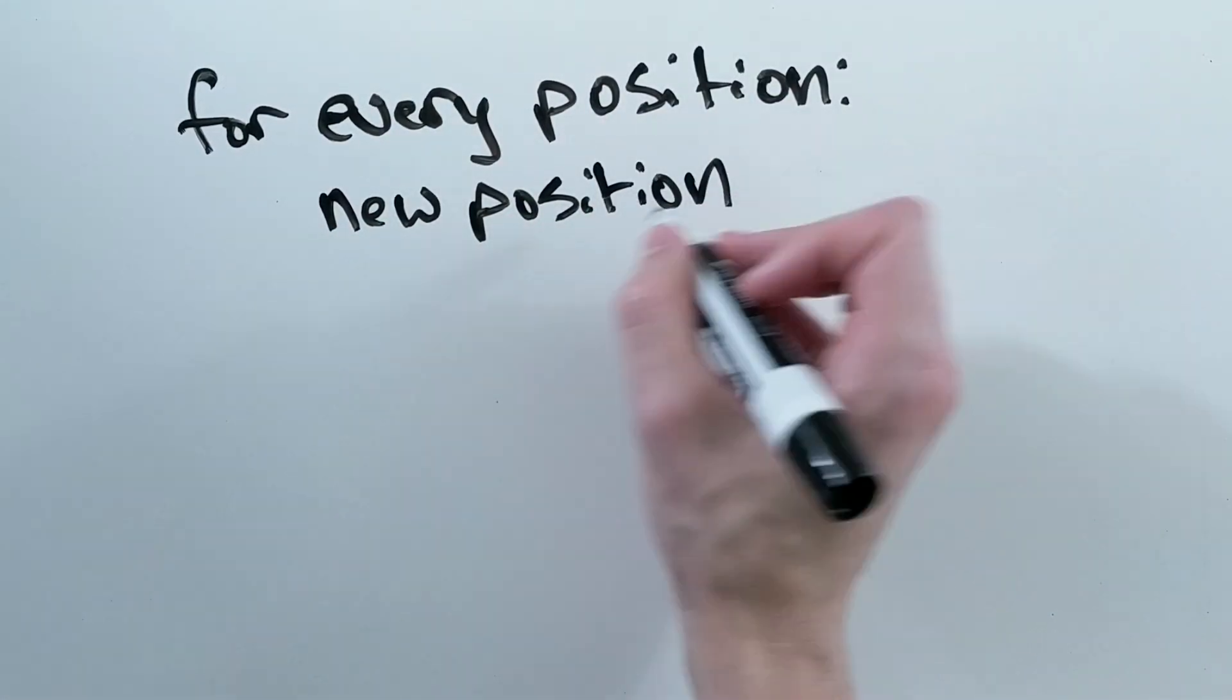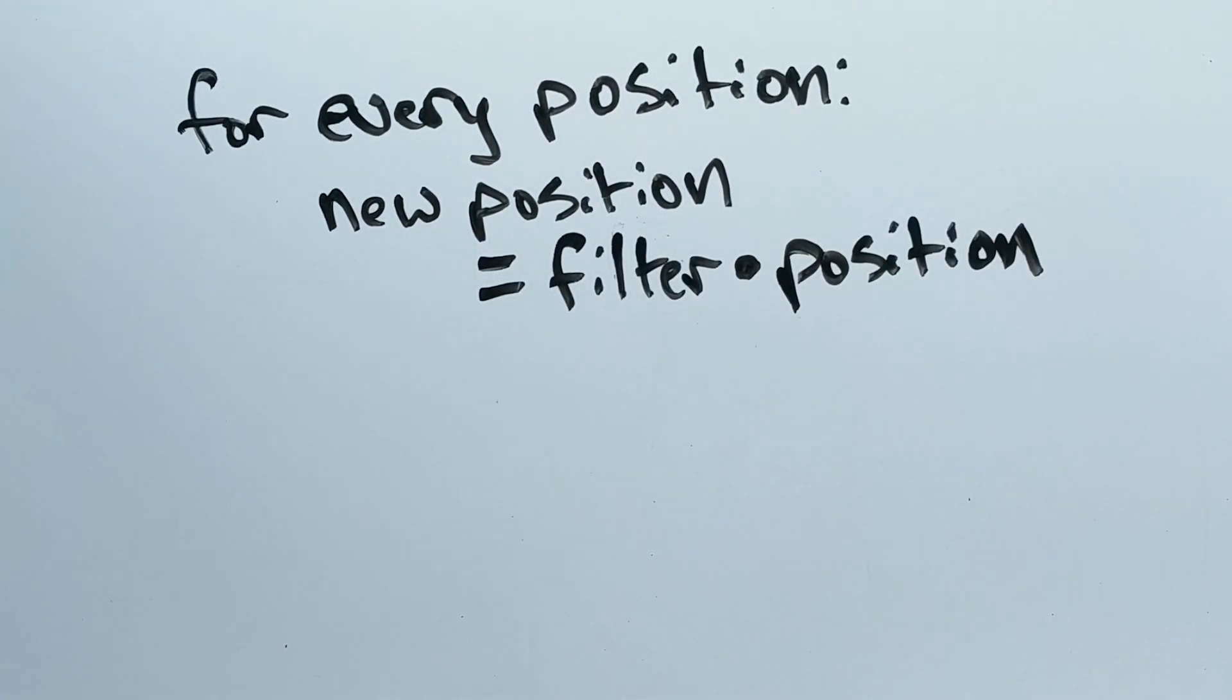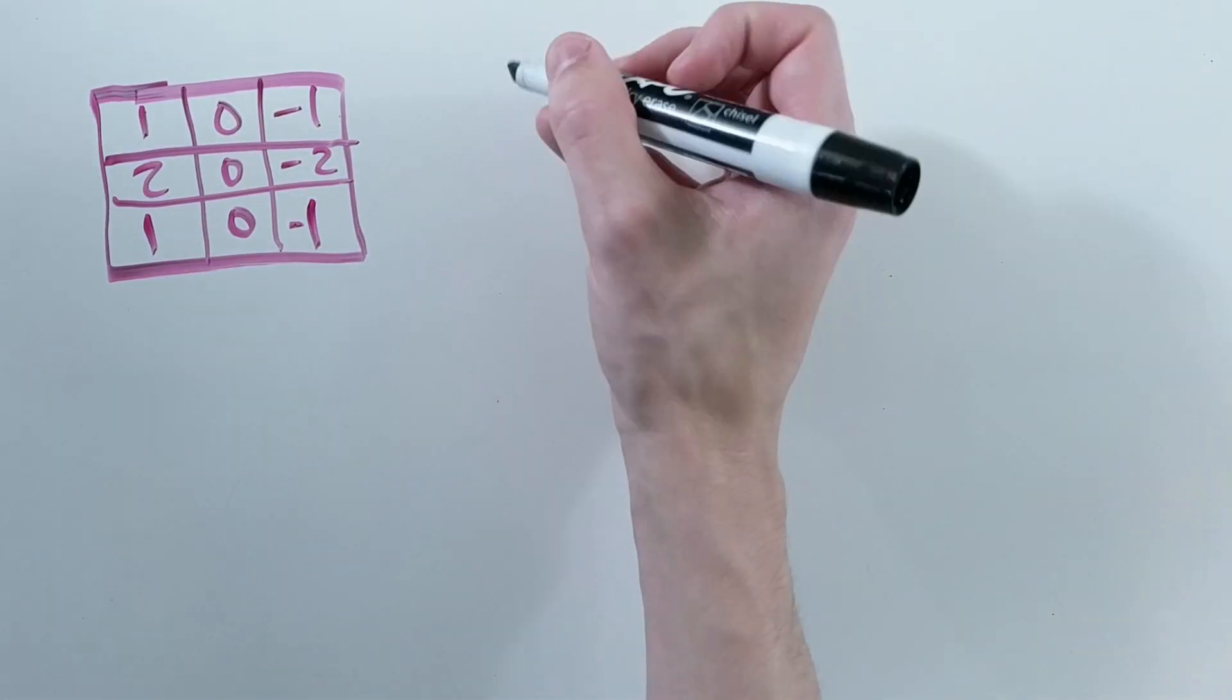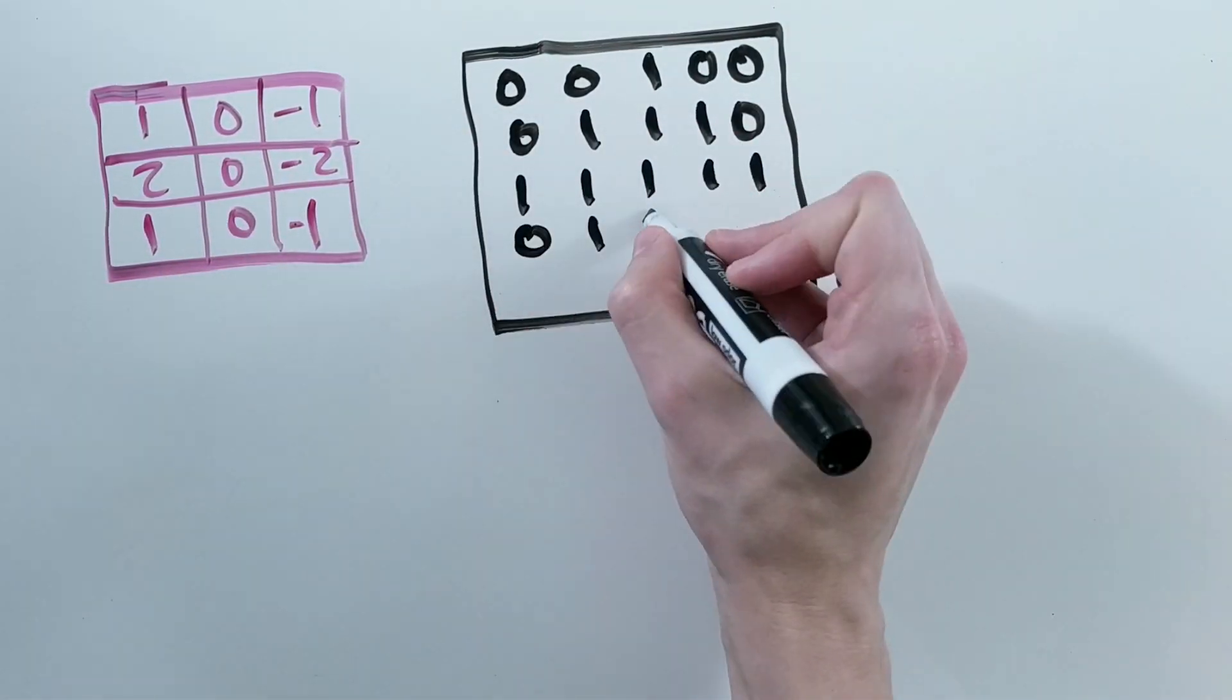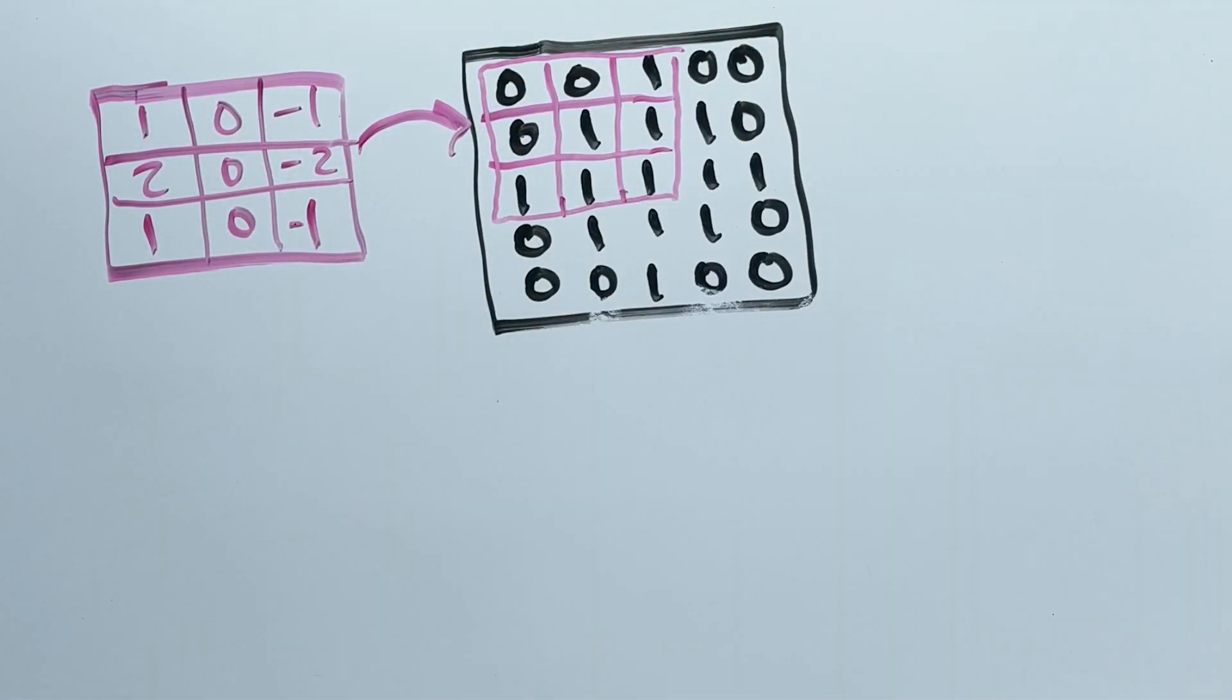More specifically, for every valid position in the input, it computes the dot product between the filter and that position. So if you have a 3x3 filter, such as the horizontal Sobel filter, and a 5x5 input, it will take that filter and line it up on the input.